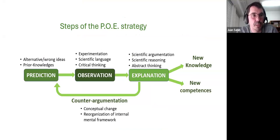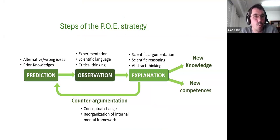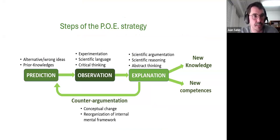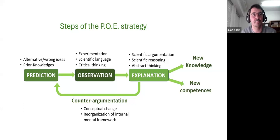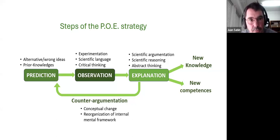The POE strategy has three steps. The first is prediction: without any previous explanation of new concepts, we ask students to predict the outcome of an experiment. We do this to detect alternative ideas and misconceptions, and to activate prior knowledge — because activating prior knowledge helps engage students and creates more significant learning later.